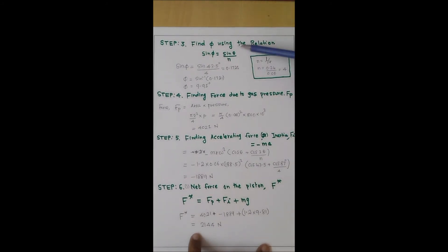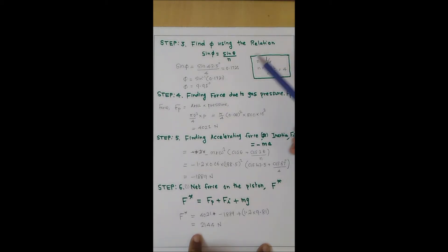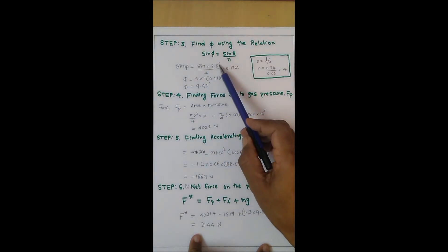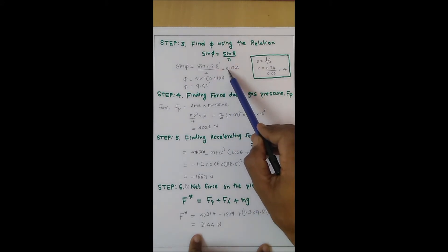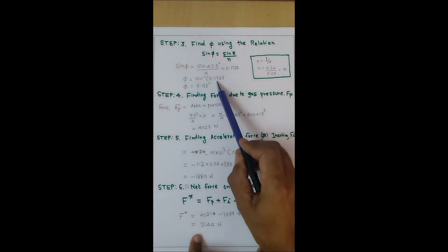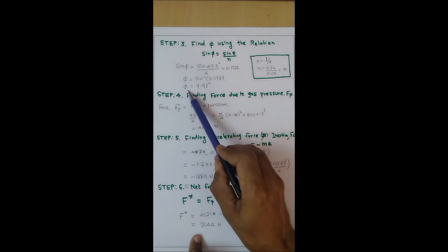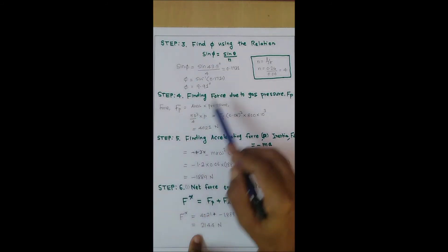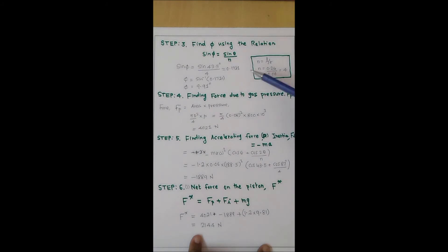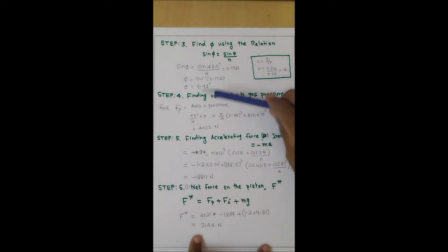Step 3 is finding phi using the relation: sin φ = sin θ / n, where n is the ratio of connecting rod length to crank length = 0.24 / 0.06 = 4. So sin φ = sin(43.5°) / 4 = 0.1721. Therefore phi = sin⁻¹(0.1721) = 9.91 degrees. Phi is the angle made by the connecting rod with the vertical axis, while theta is the angle made by the crank with the vertical axis from the inner dead center.